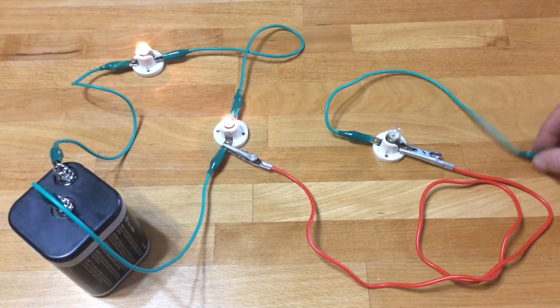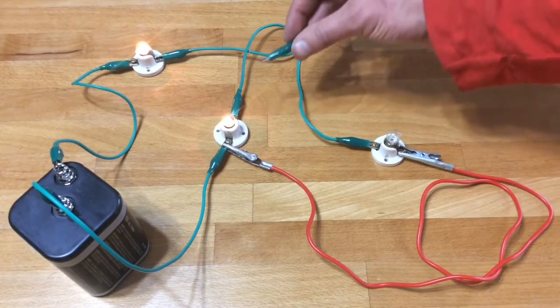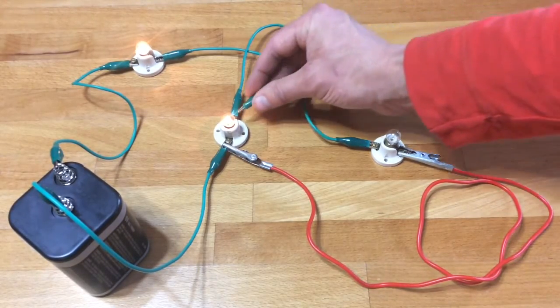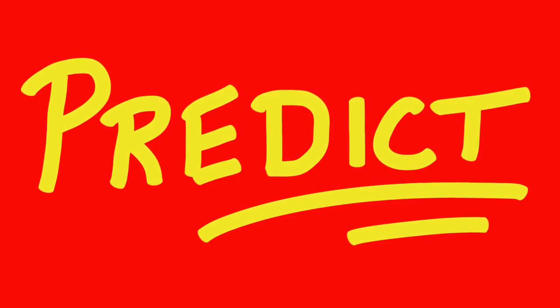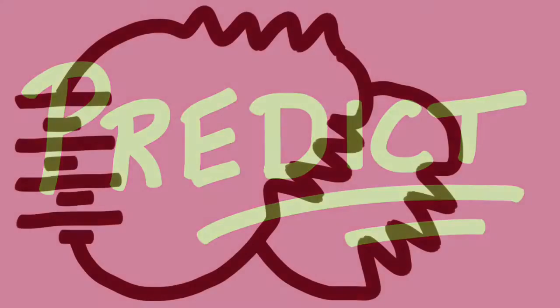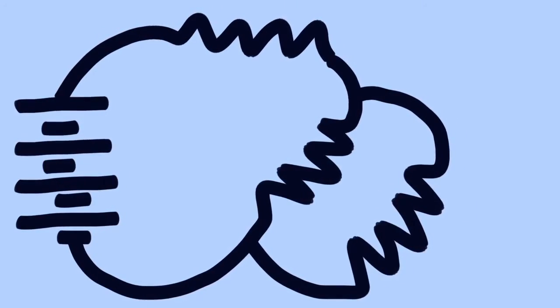There's another circuit. You have two bulbs in series. And I'm going to add another bulb in parallel to one of those bulbs. What happens to the brightness? What happens to the current? There's the circuit. Predict what's going to happen.